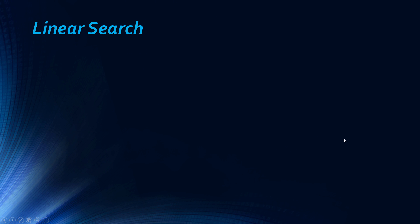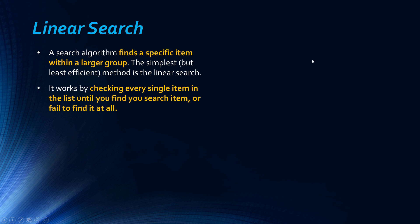But anyway, if we move on to looking at our first algorithm, and that's switching up a bit, we're looking now at searching algorithms. And what they do, they just find an item in a list essentially. The simplest but least efficient method is linear search. And this is kind of the one that you could ask a five year old to search for something, and this is what they do. It literally checks every single item in the list until you find your search item or you don't find it at all.